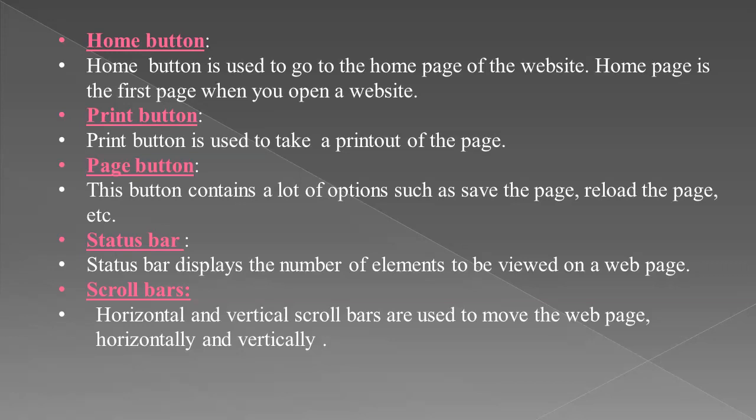The home button is used to go to the home page of the website. The home page is the first page when you open a website. The print button is used to take a printout of the page. If you want to print the current page, click on the print button. The page button contains many options such as save the page, reload the page, etc. The status bar displays the number of elements to be viewed on a web page and the progress of the web page being displayed. Finally, horizontal and vertical scroll bars are used to move a web page horizontally and vertically respectively.